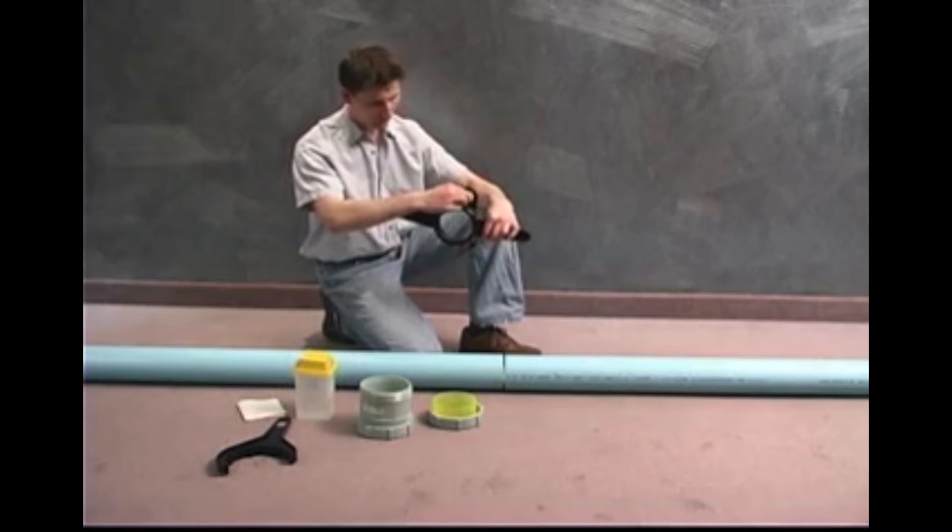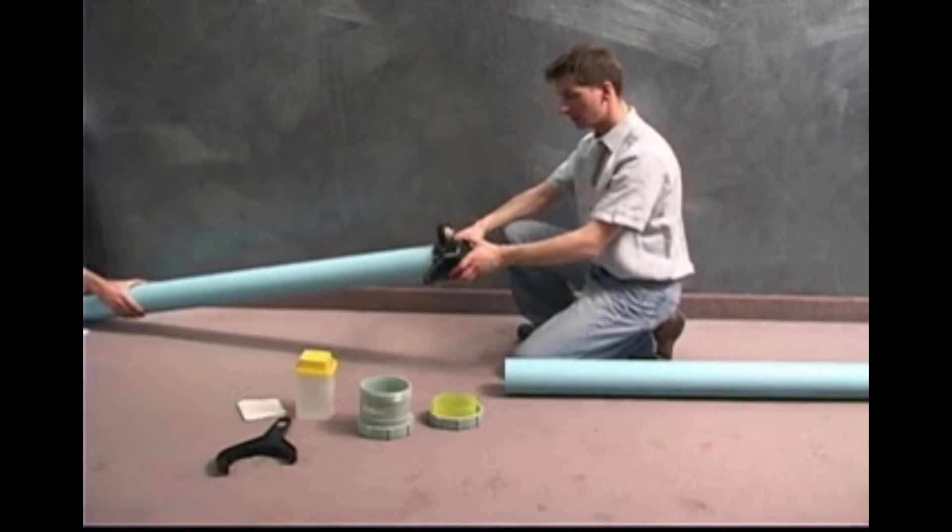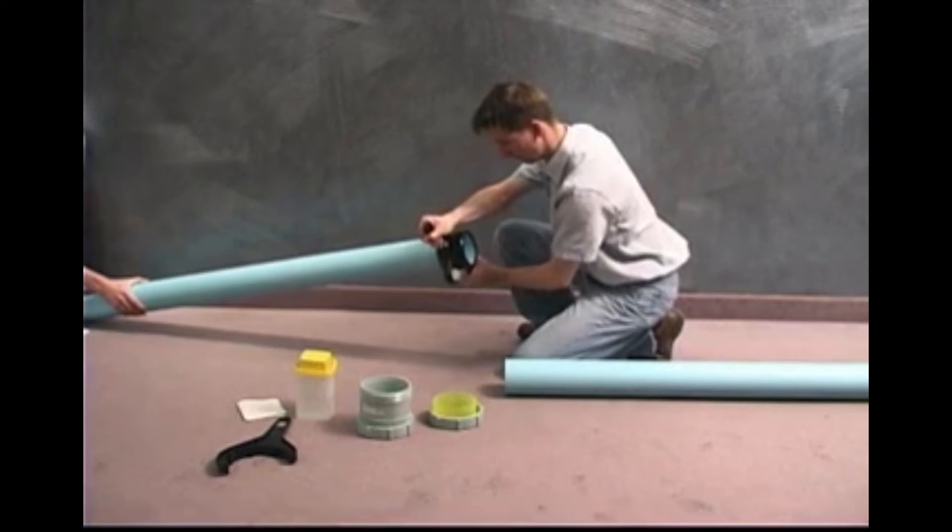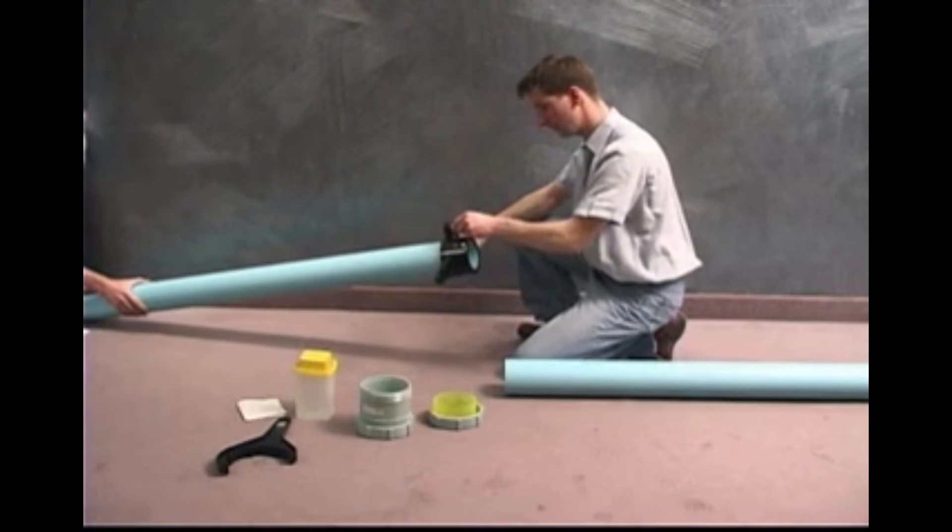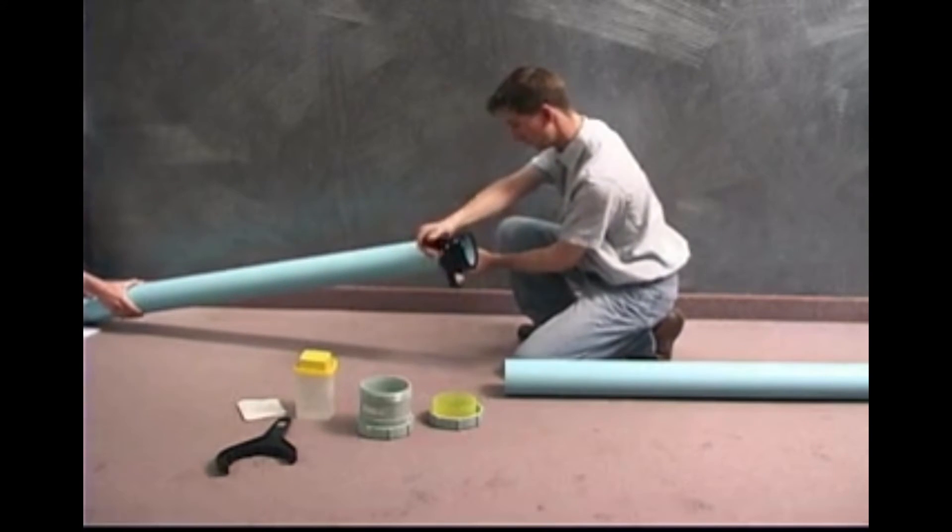Examine the grooving tool to ensure that the cutting blade is fully retracted. Insert the pipe into the grooving tool. Set the grooving blade at the half depth position and rotate the tool in a counter clockwise direction. After one complete turn, set the blade at the full depth position and again rotate the tool one full turn counter clockwise.